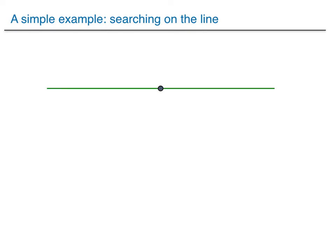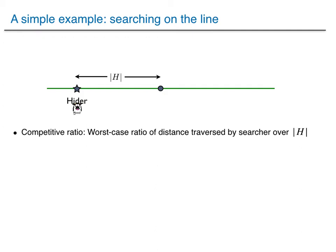Let me illustrate this with a simple example. We're given the infinite line and a point designated as the origin. Somewhere on this line, there's a hider hiding at a certain distance from the origin. The searcher would like to locate the hider, and we can follow a search strategy which goes back and forth until eventually the hider is located. There is a performance measure associated with this strategy, known as the competitive ratio — the worst-case ratio of the distance traversed by the searcher divided by the distance of the hider from the origin. If there is no information, the best we can do is a competitive ratio equal to 9.